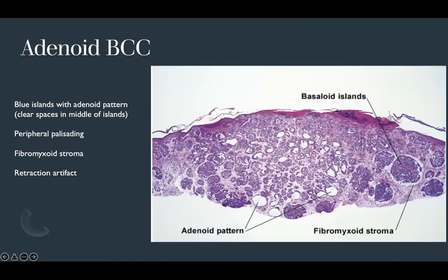Adenoid BCC is sometimes used interchangeably with infundibulocystic BCC but represents a purer adenoid variant — basaloid islands with clear spaces in the middle, creating openings within the island, with traditional peripheral palisading, fibromyxoid stroma, and retraction artifact. Unlike infundibulocystic BCC, there are fewer keratin pseudocyst formations and more prominent clear intra-island spaces.